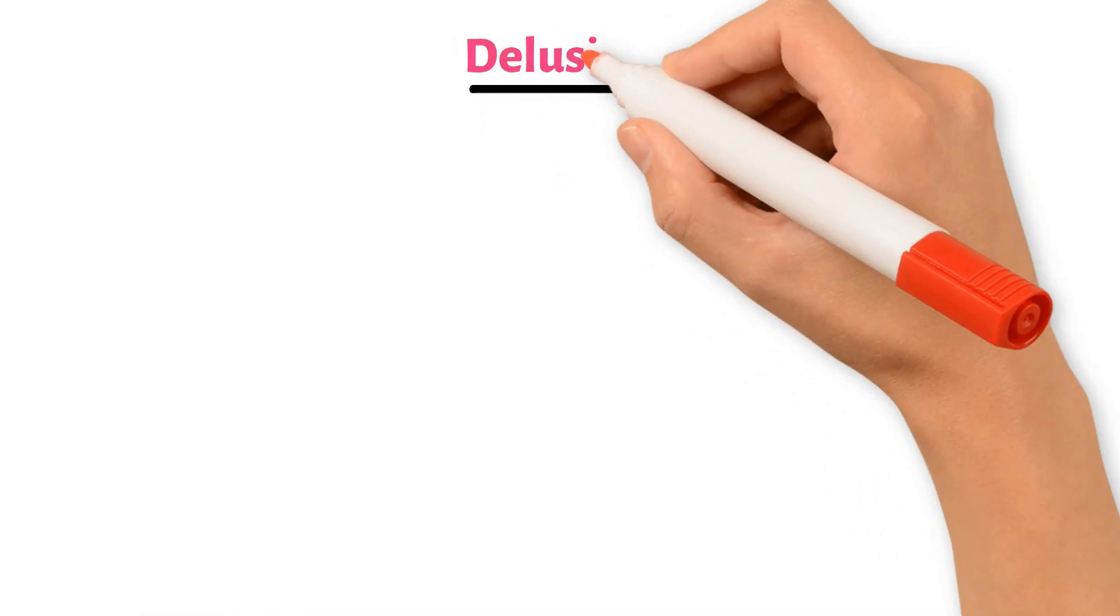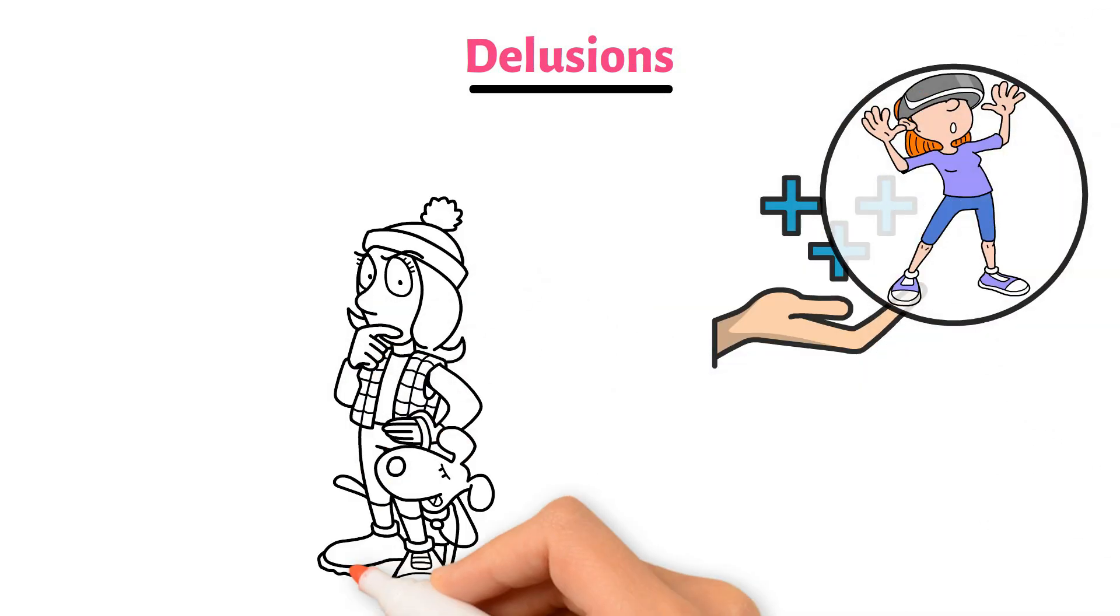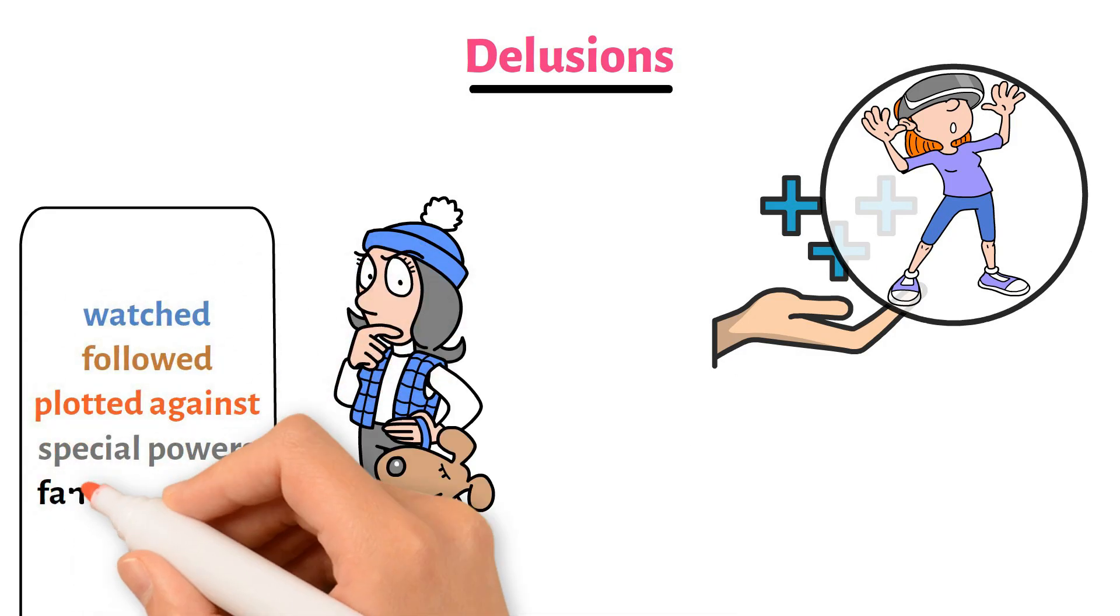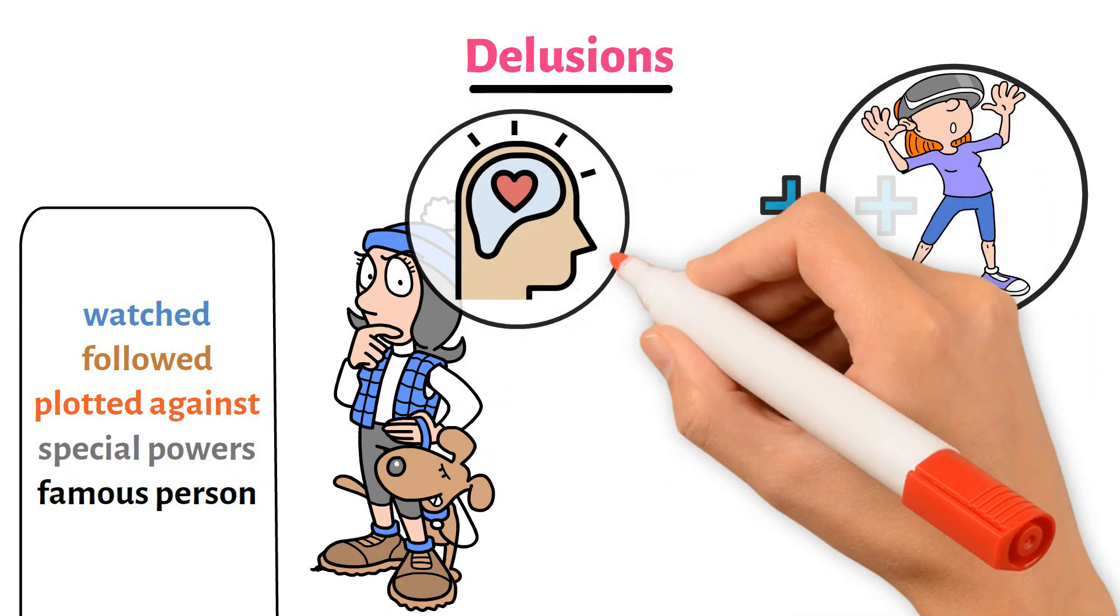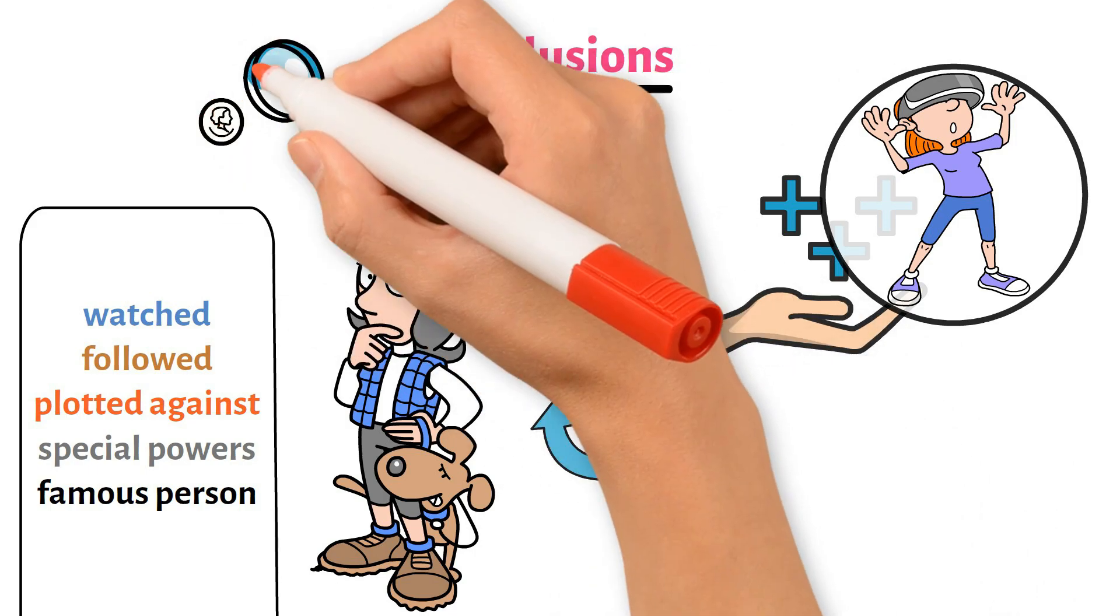Next, delusions. These are strong beliefs in things that have no basis in reality. For instance, someone might believe they are being watched, followed, or plotted against, or they might think they have special powers or are a famous person. These beliefs are very real to them and cannot be changed easily, even when shown evidence to the contrary.